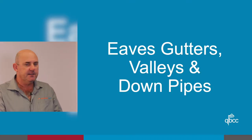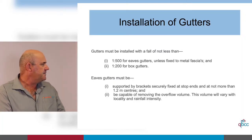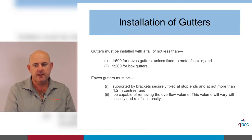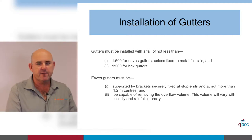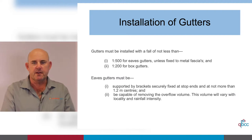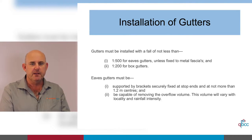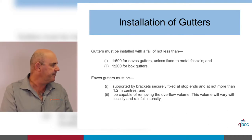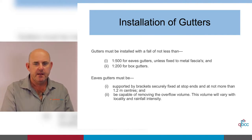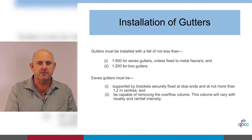Now we're getting onto some eaves gutters, valleys and downpipes. Gutters must be installed with a fall of not less than 1 in 500 for eaves gutters and 1 in 200 for box gutters — that's 5mm per meter for box gutters. That is the minimum requirement. I would suggest and recommend that you put a little bit more than that in; there's no harm in putting more fall in a gutter. Especially with light framing these days, they seem to settle and you're left with ponding, which is very difficult and expensive to remedy later.